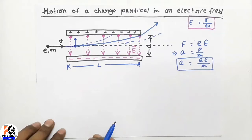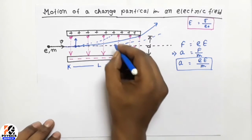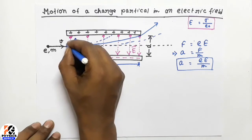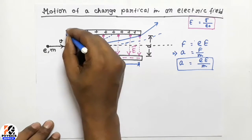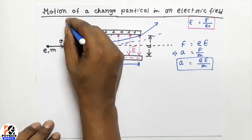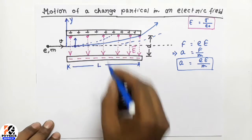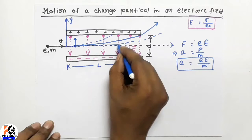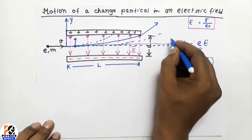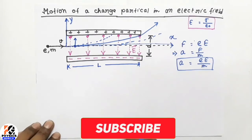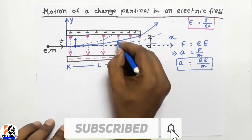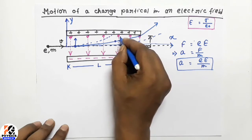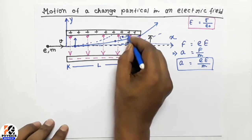To calculate the path of the electron's motion, let us consider that the entry point is the origin. The y direction corresponds to the vertical axis of the coordinate system and the x axis is along the horizontal direction. At any time t, the position of the charged particle is (x, y).